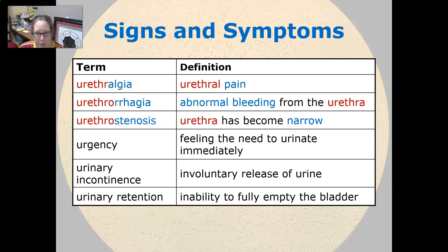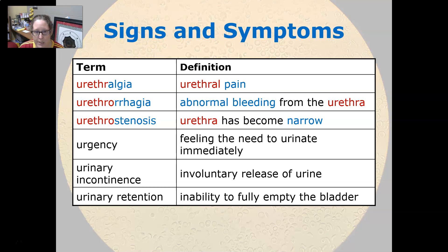Urethralgia is urethral pain. Urethorrhagia is abnormal bleeding from the urethra. Urethrostenosis is when the urethra has become narrowed. Urgency is a feeling of the need to urinate immediately.